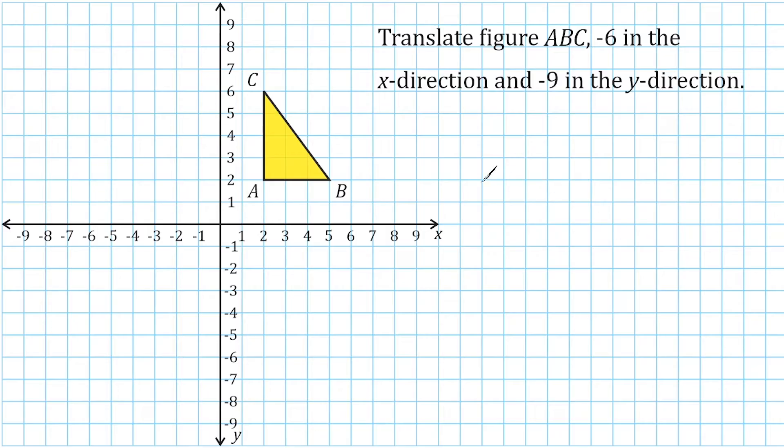When we translate a figure on the coordinate plane, that just means we are sliding the figure around. That's all we are doing. Now, a quick way to do this is first determine where the current coordinates are of the figure in question. So for this triangle here...